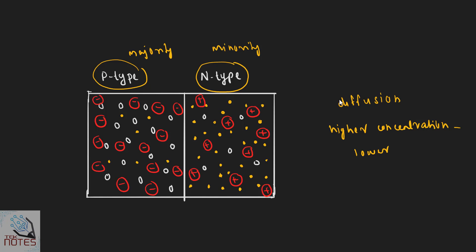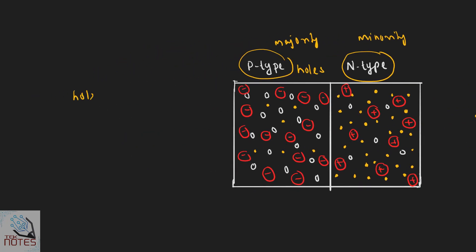When we combine the two materials, carriers move from higher concentration to lower concentration — that means diffusion. Holes diffuse from P-type to N-type.